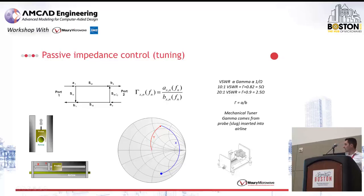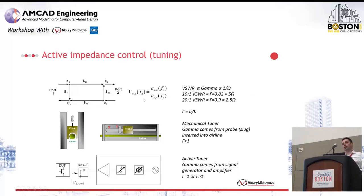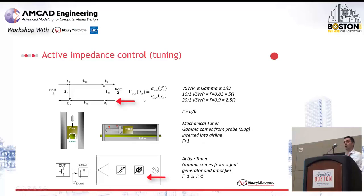In recent years, active tuning has gained a lot more popularity because it solves some of the drawbacks of passive tuners. In an active load pull system, instead of creating a reflection physically with a probe, you generate an A wave with a signal generator. You have another source whose amplitude and phase you can change, and by changing the phase and amplitude of this A wave you can reach any gamma you want. The nice thing about an active tuner is that you can plug in an amplifier, so your A wave can be as large as you want — losses of the passive network are no longer an issue. In modern electronic implementations, it can also be very fast.